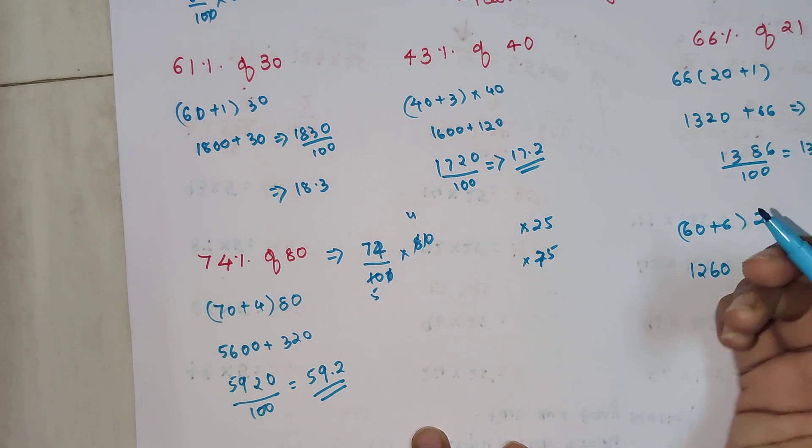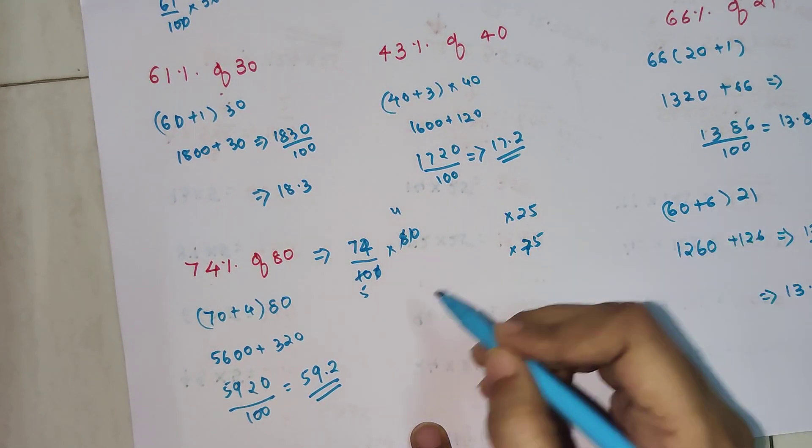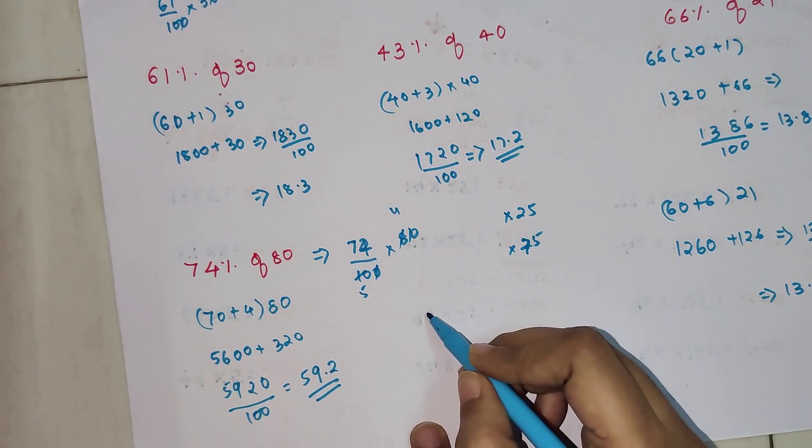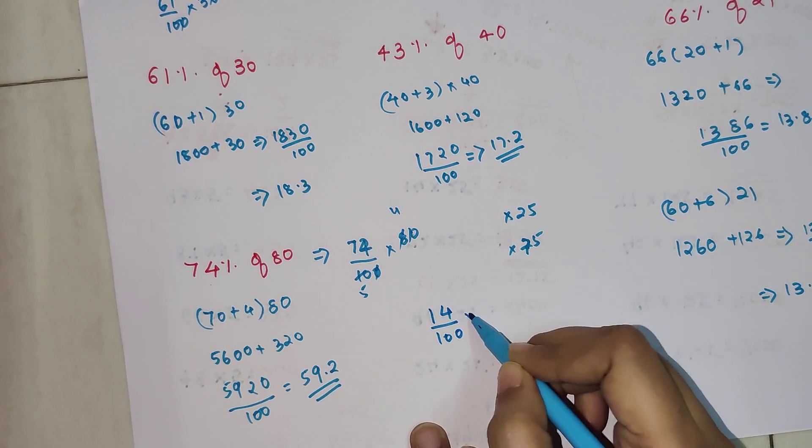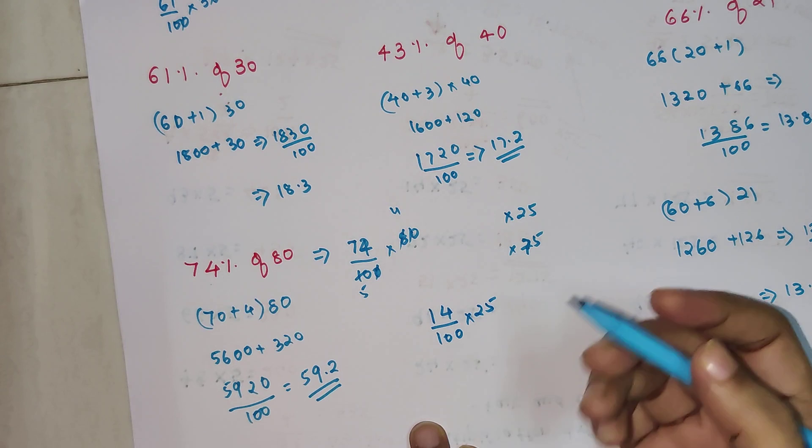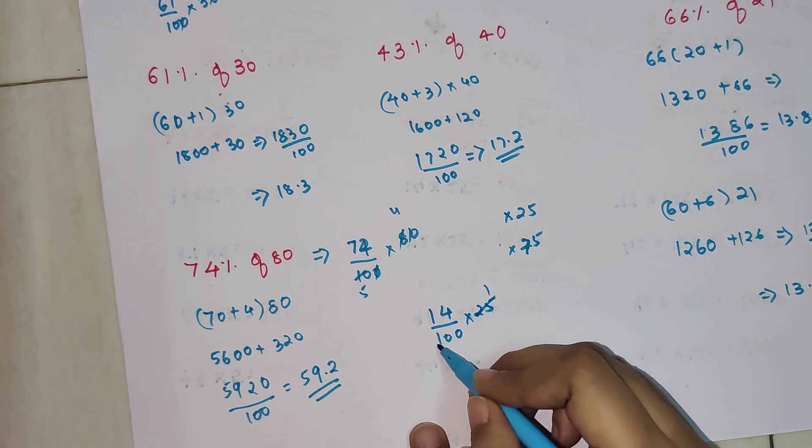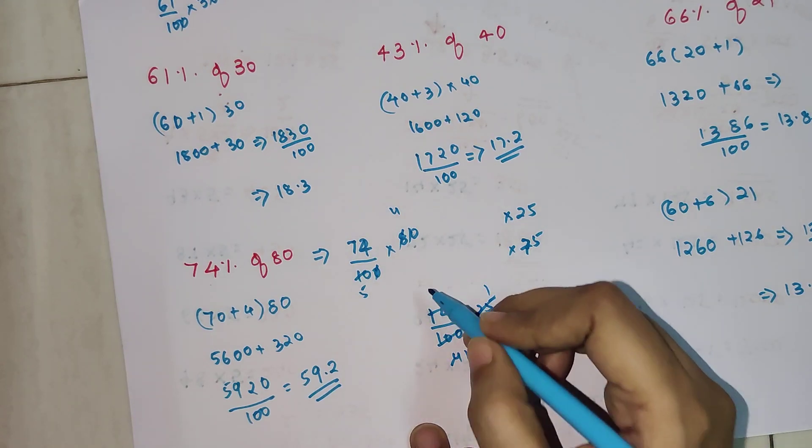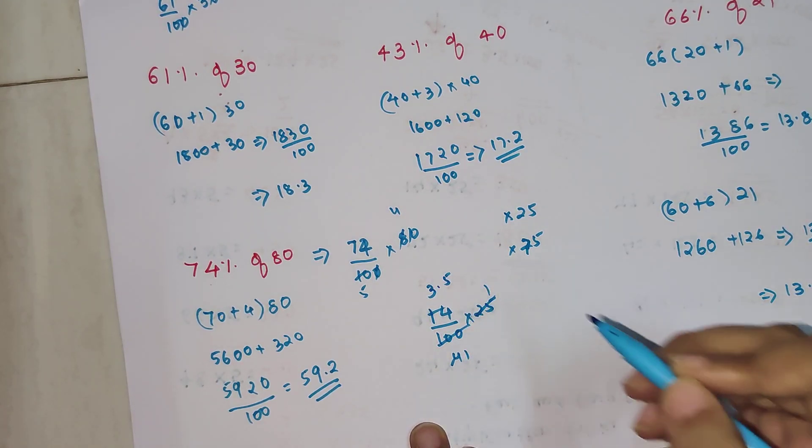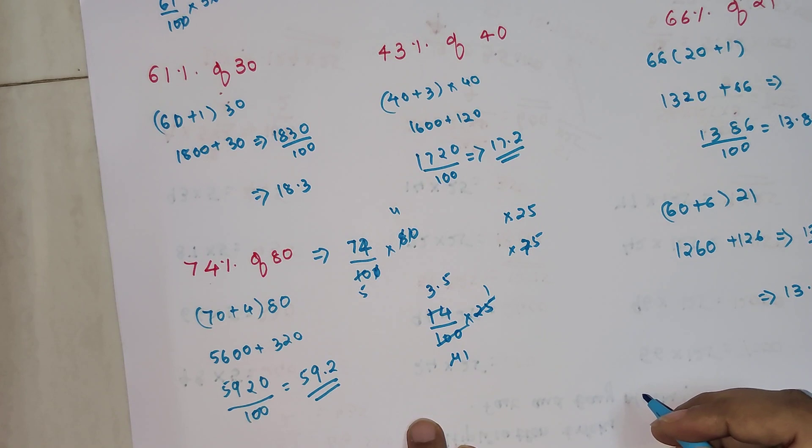Since I just mentioned it, if I have any number, let's say 14 percent of 25, then I just have to simply do this. 25 ones and 25 fours, then I just have to cancel this. This is going to get you 3.5.